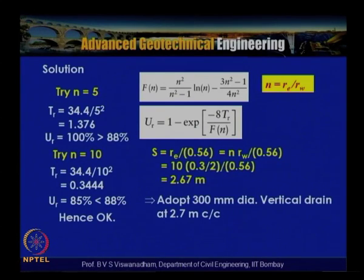In summary, U_R was calculated from the target U_VR, then matched to assumed N values by trial and error. The N value giving U_R closest to the desired value is selected. This implies that with drains at the computed spacing, settlement during tank construction will not exceed 20 mm — the tolerable settlement decided by the design engineer based on site conditions and client requirements.